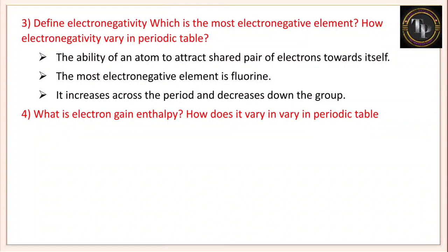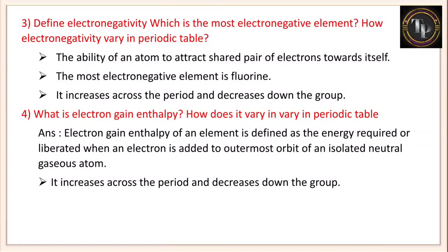What is electron gain enthalpy and how does it vary in the periodic table? Electron gain enthalpy of an element is defined as the energy required or liberated when an electron is added to the outermost orbit of an isolated neutral gaseous atom. It increases across the period — moving left to right — and decreases down the group — moving from top to bottom.